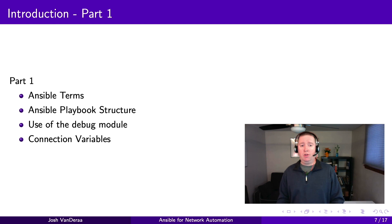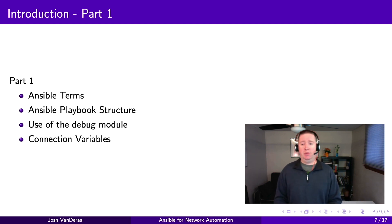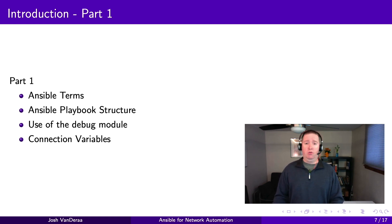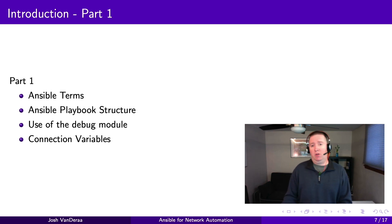So what are we going to be covering? In part one, we're going to go over Ansible terms and the playbook structure. We're going to take a look at the debug module, which is my way of making sure I know what I'm doing with automations — I can't say that enough. Use the debug module to see what the structure of the data looks like. And then we'll cover the connection variables.